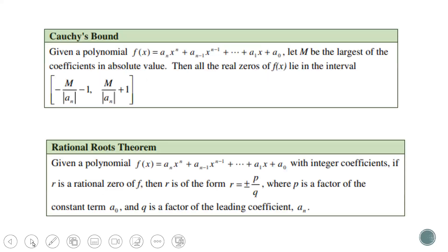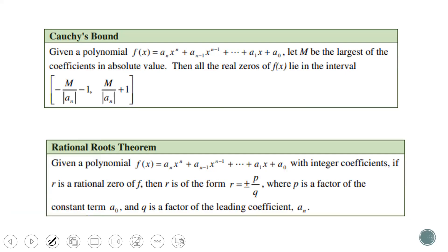Before we do that, just to show you the information about Cauchy's bound as well as the rational roots theorem: the interval we get from Cauchy's bound comes from this formula here — negative M over the absolute value of a sub n, minus 1, up to M over the absolute value of a sub n, plus 1. The value M comes from the coefficients in your polynomial, whichever has the largest absolute value. And a sub n is the leading coefficient — the number next to the variable with the highest power.